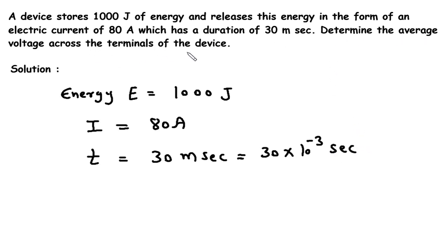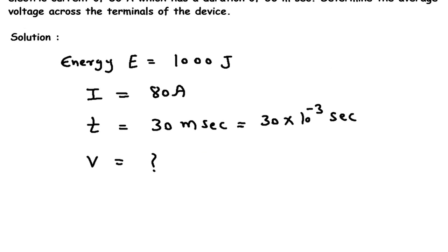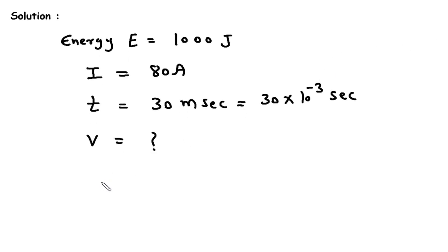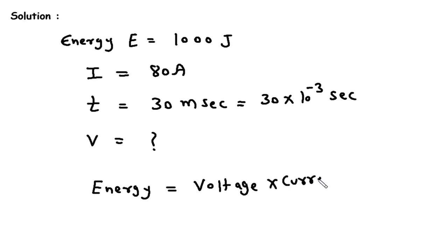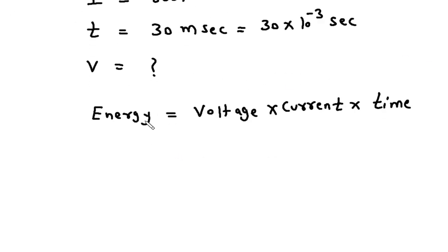We have to determine average voltage V. Now we have the formula for energy: energy is equal to voltage into current into time. The energy is in joules, voltage is in volts, current is in ampere, and time is in seconds.